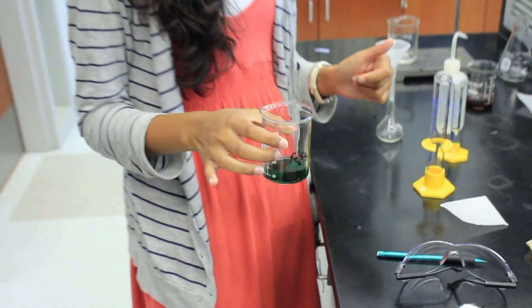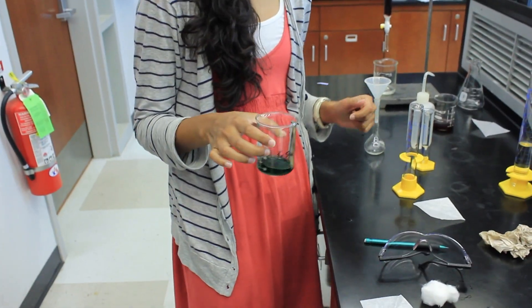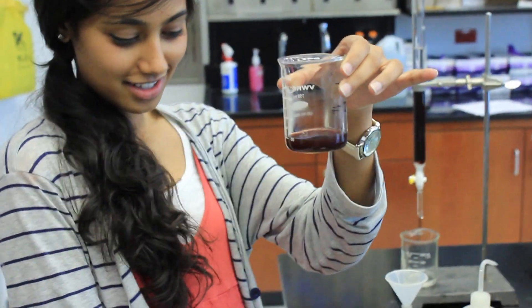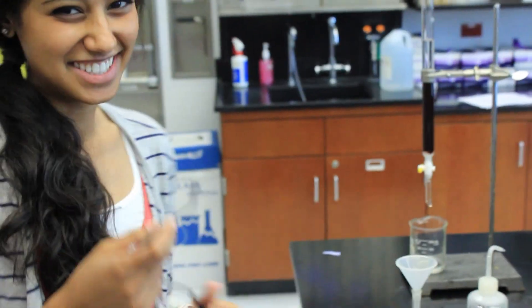You're going to swirl this for 30 minutes and eventually it's going to look like this. It'll be a deep red color, kind of murky. Oh, and you have to wear your goggles, so don't forget those.